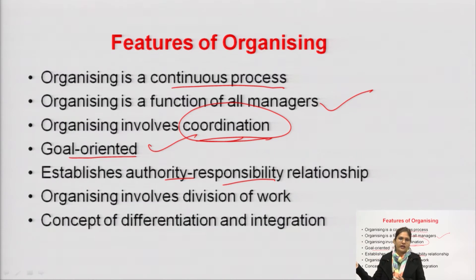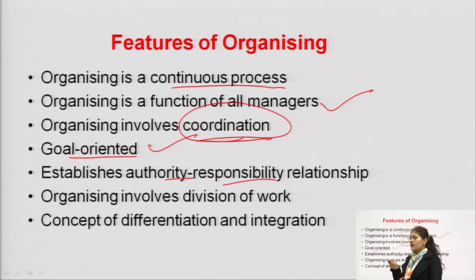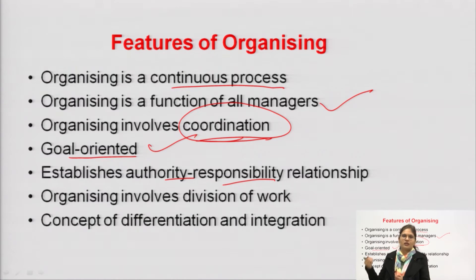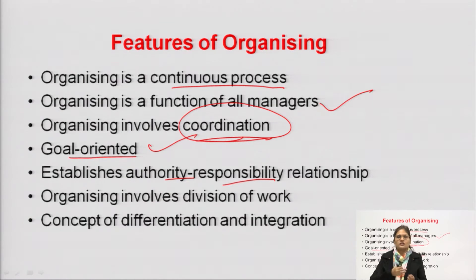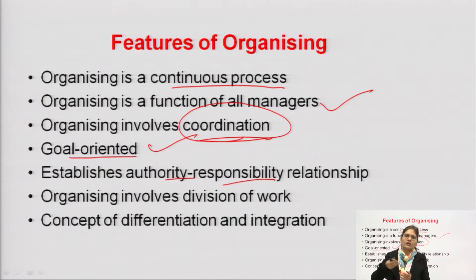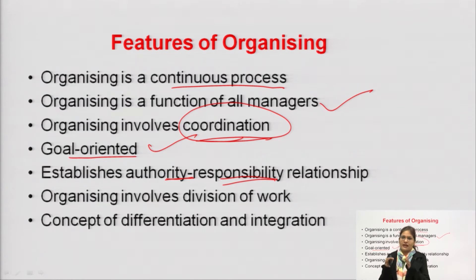Without authority, a person is not able to do his work properly. For example, a security guard's responsibility is to stop unknown vehicles from entering the campus. To perform that responsibility, he also needs the power to stop those vehicles. So that power must be allotted to the security guard. Authority and responsibility need to go simultaneously, and this is done in the organizing function.